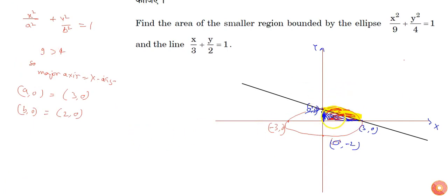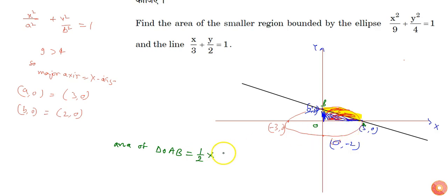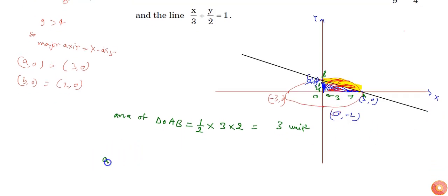The area below the line is nothing but the area of triangle OAB, which is 1 by 2 times base into height. The base is 3 and the height is 2, so the area of triangle OAB is 3 square units.